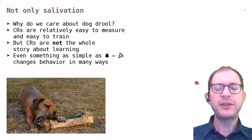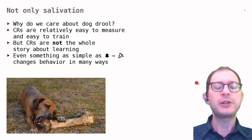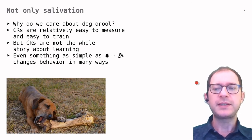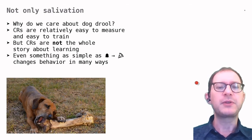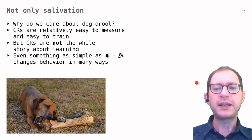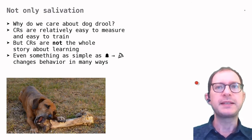In summary, the salivation CR or any other CR is just an index that learning has happened. It is not the main interest of the psychologist. Our main interest as psychologists is to understand how learning works, not what makes dogs salivate or rabbits blink. If you keep in mind our goal of understanding learning, all this talk of salivation and blinking will make more sense.